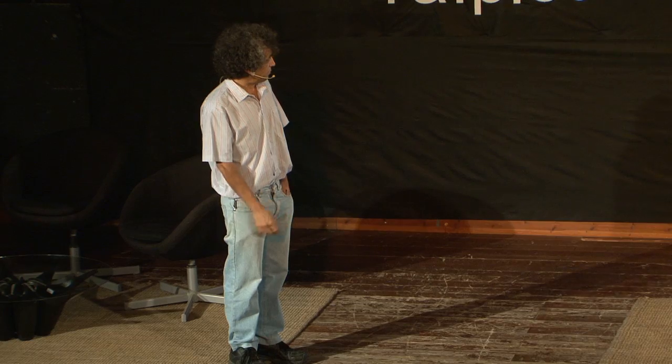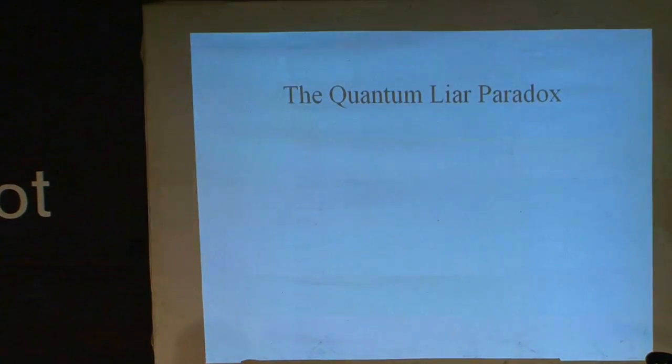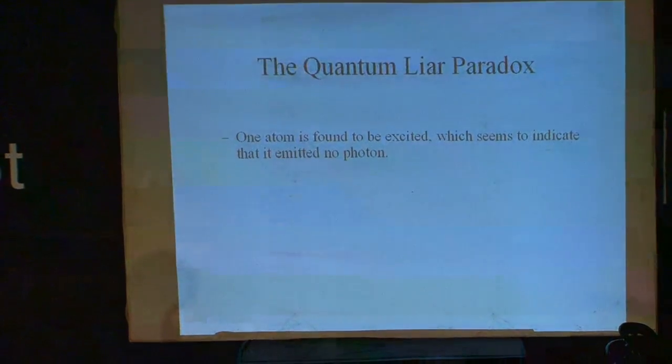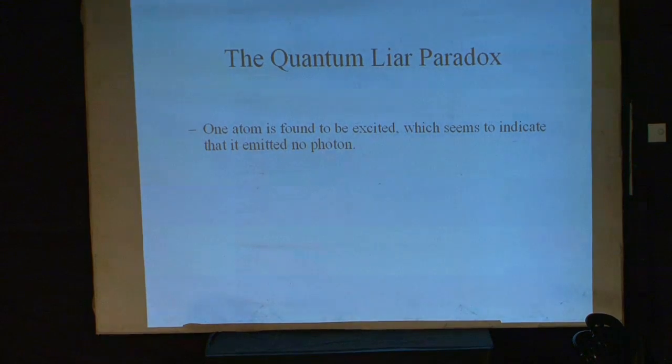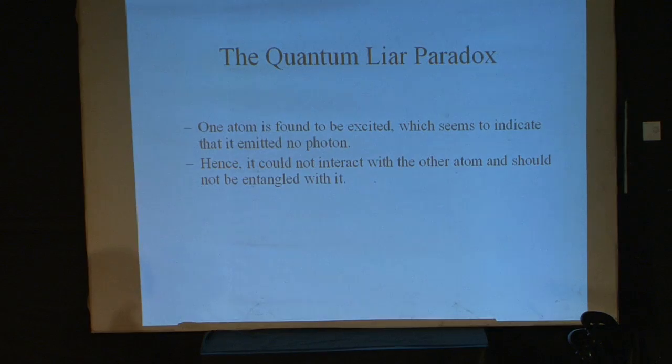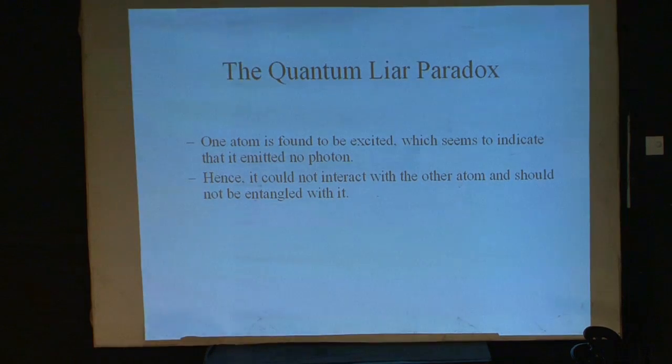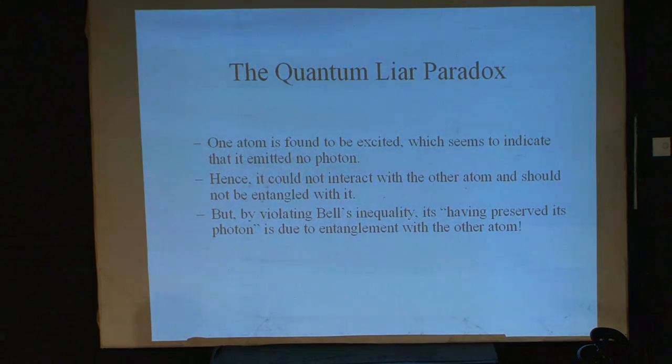This is the EPR. By Bell inequality, we show that this is non-local. One of the atoms is found to be excited, which seems to indicate that it has emitted no photon. It should not be correlated. There shouldn't be any interaction that we know of, neither in the past nor in the future, between that atom and the other atom. But by violating Bell's inequality, its having preserved its photon means that it's somehow talked with the other one before they established any contact between them.